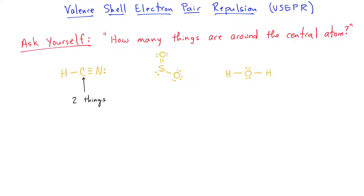For SO2, we see that there are actually three things around the central atom. There are two atoms and a lone pair, and so that counts as three things.